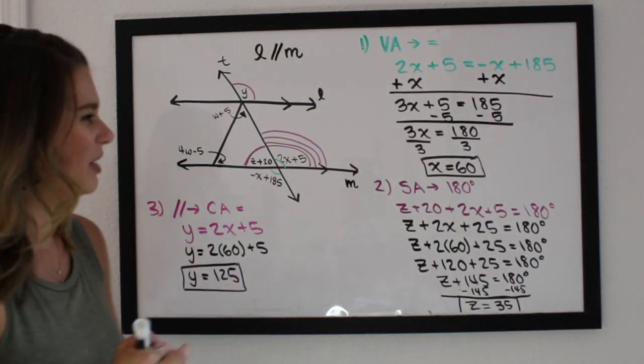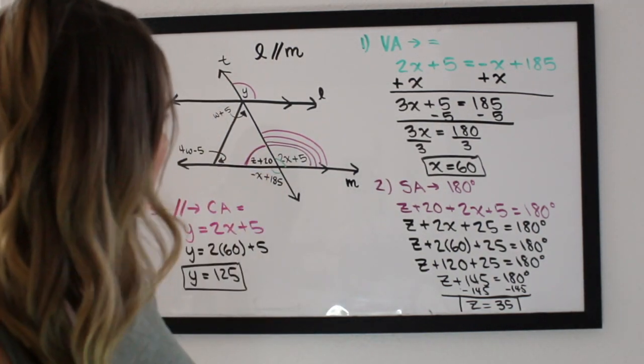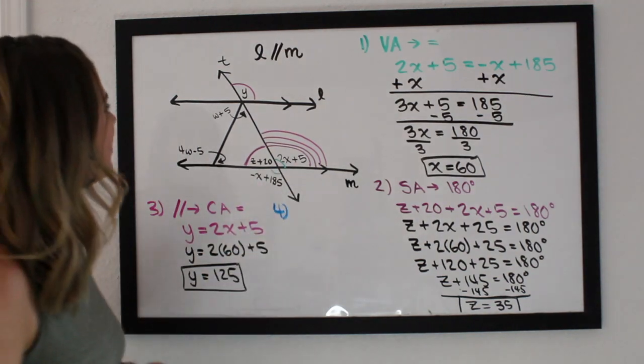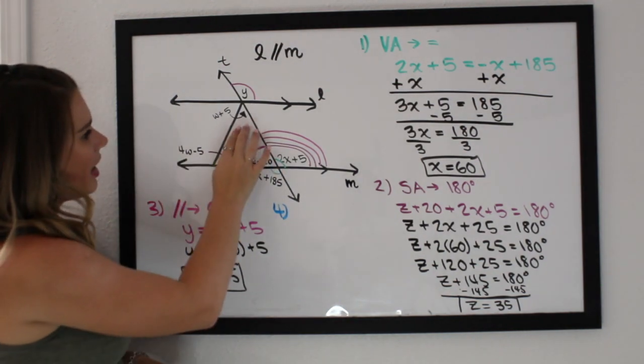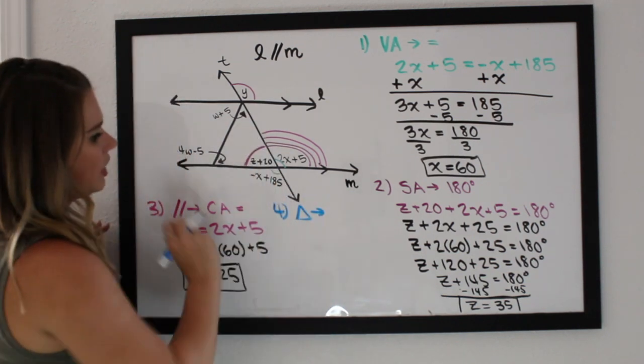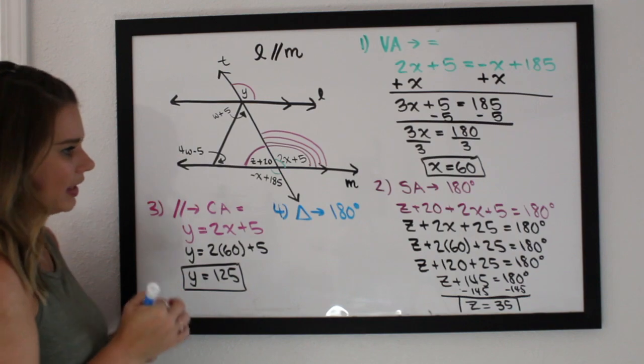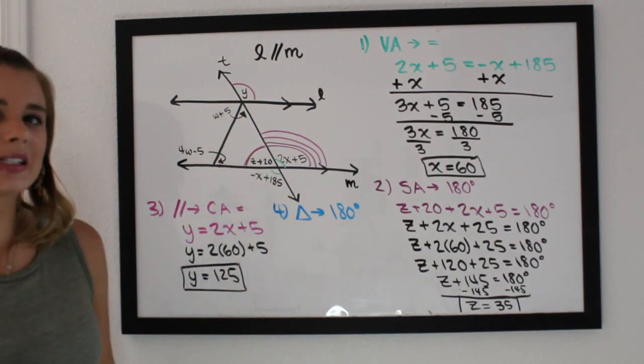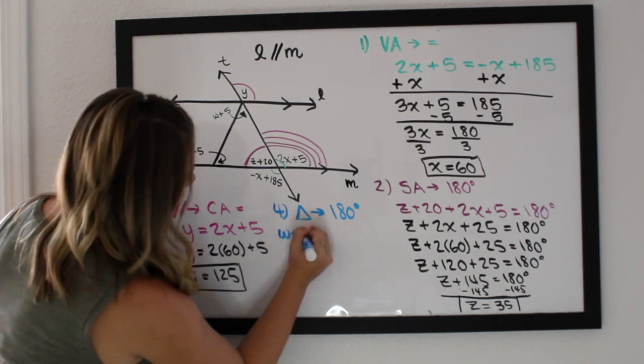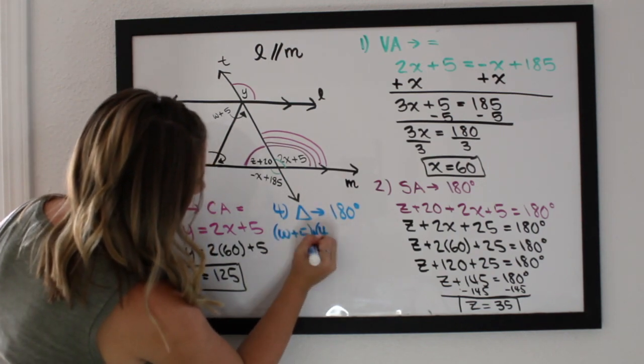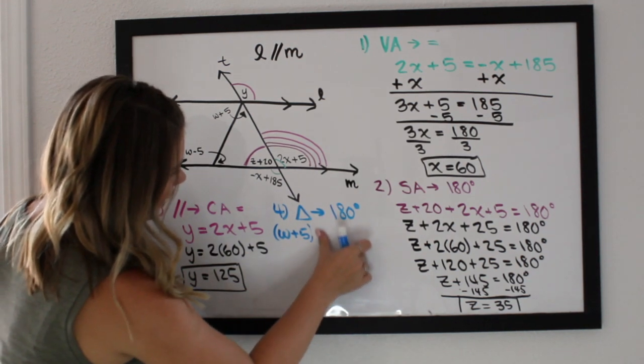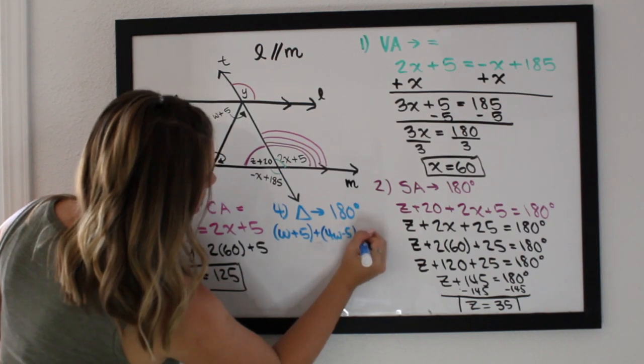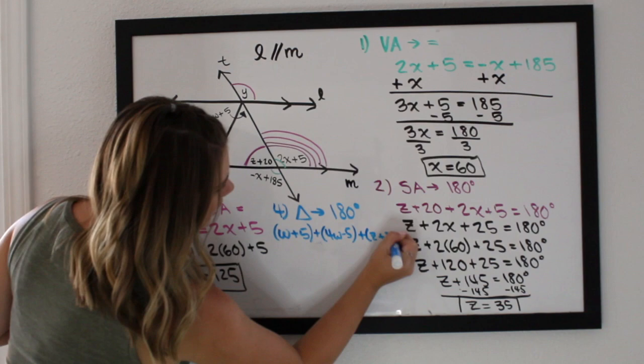Now we are at our last variable, which is w. So number four. Now it looks like I have a triangle here. So we could use the theorem that the sum of the angles in a triangle add up to 180 degrees. And I might actually run out of room here. So that means this angle plus that angle plus that angle is going to equal 180 degrees. So I have w plus 5 plus 4w, I'm going to put these in parentheses because you don't want to mix up your negatives when you're solving, w plus 5 plus 4w minus 5 plus z plus 20 equals, see I did run out of room.